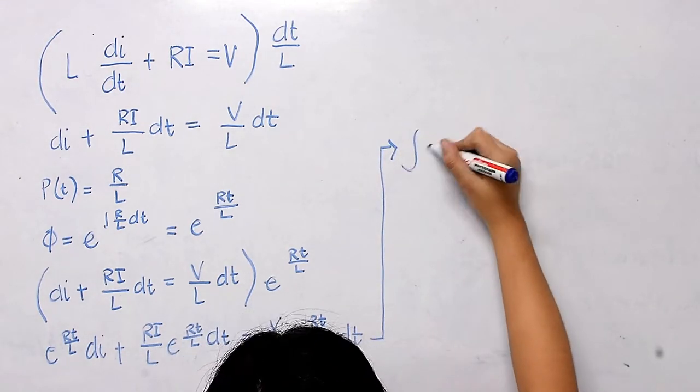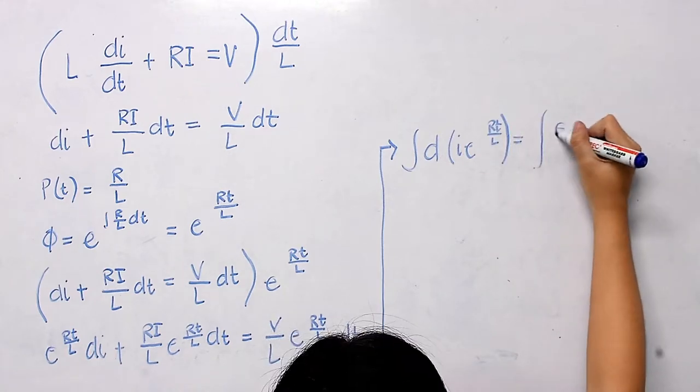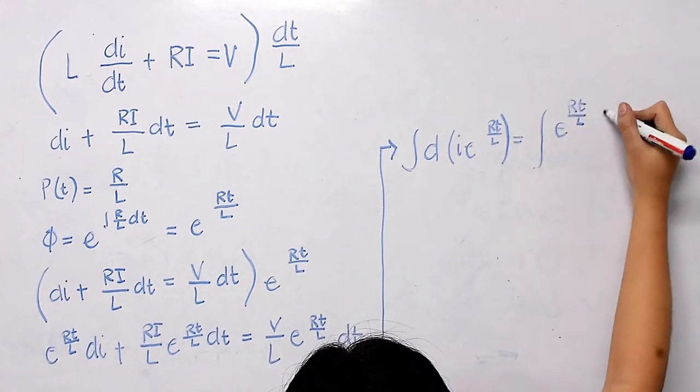After multiplying the integrating factor with the linear equation, we will integrate e^(RT/L) di and the Q(t) dt.